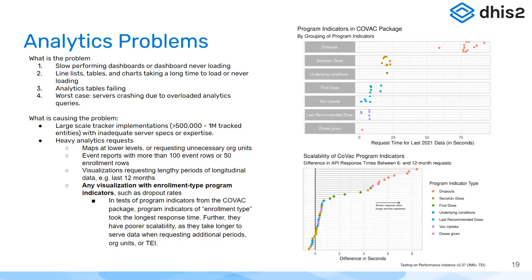We're going to talk about what you can do to fix analytics performance. When I say 'fix,' most of these are implementation things you can do to mitigate analytics performance issues. The problems we're really seeing are slow performance of analytics dashboards, long lists, tables, and charts that take forever to load or never load; analytics tables failing; and in the worst case scenario — which almost never happens — servers crashing because analytics queries are too big. That's only happened once or twice, mainly due to poor hardware.